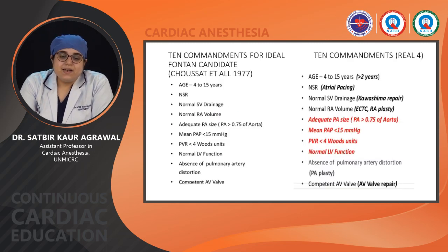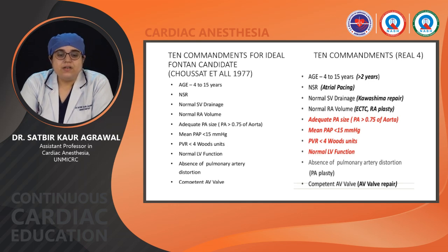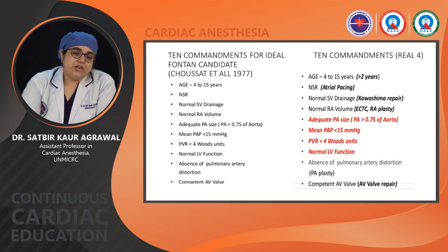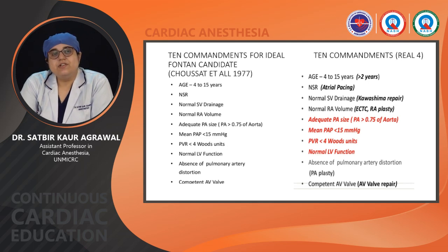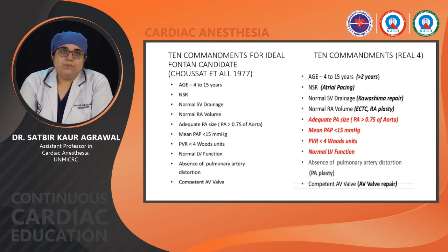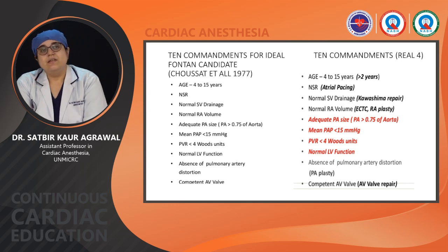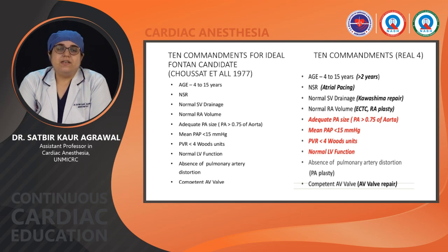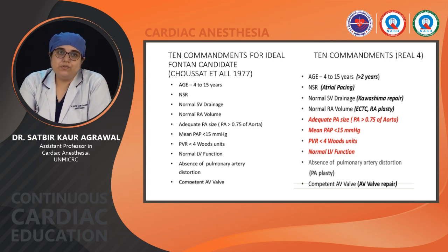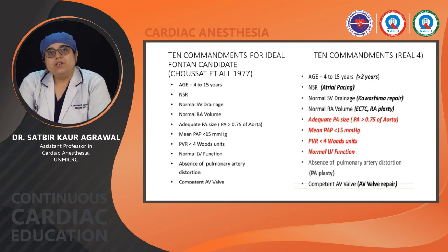Back in 1977, Choussat et al gave 10 commandments for the ideal Fontan candidate: age 4 to 15 years, normal sinus rhythm, normal systemic venous drainage, normal RA volume, adequate PA size, mean pulmonary artery pressure less than 15 mmHg, pulmonary vascular resistance less than 4 Wood units, normal LV function, absence of pulmonary artery distortion, and competent AV valve.